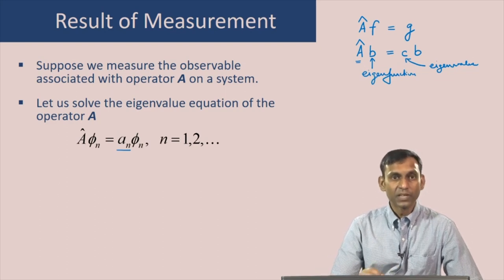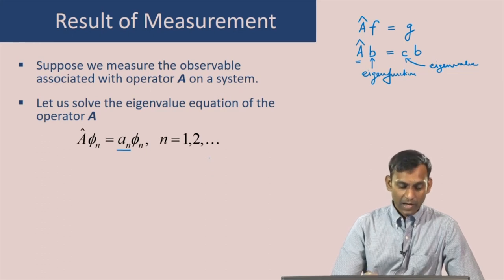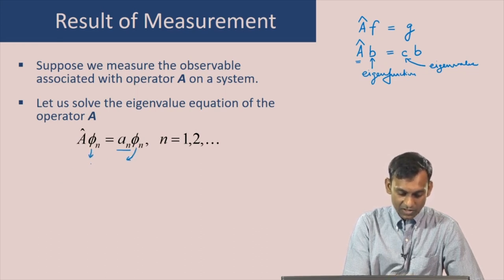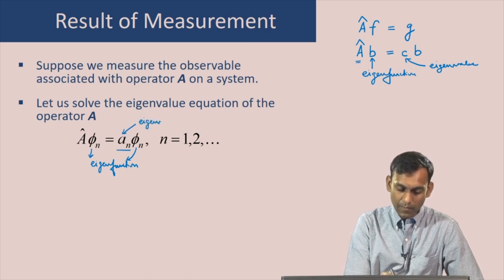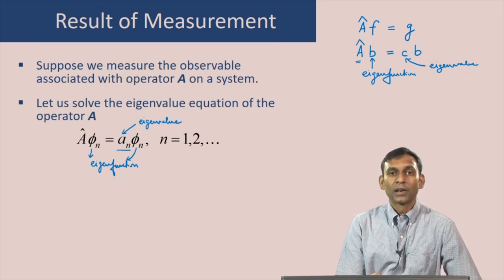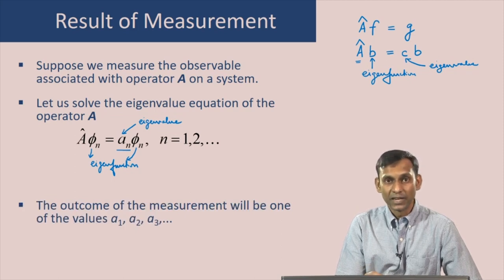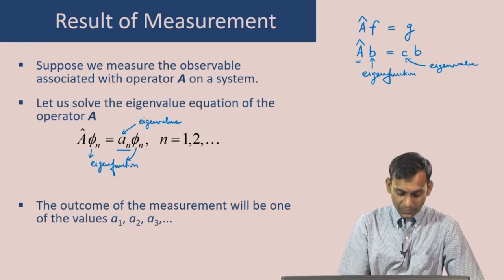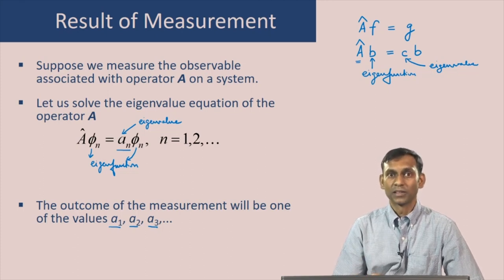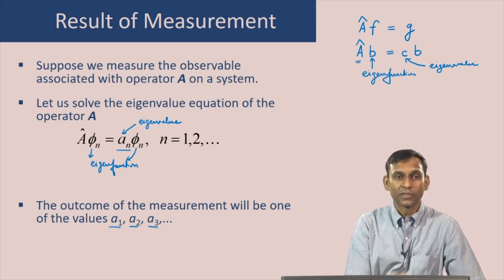Coming back to the measurement of the observable corresponding to the operator A: we solve the eigenvalue equation of the operator A, these phi's are the eigenfunctions, and this constant A is the eigenvalue. There are multiple eigenvalues and eigenfunctions denoted by n = 1, 2 and so on. The postulate states that when we make a measurement, the outcome will be one of these values A1, A2, A3 and so on. You cannot get any arbitrary value as in classical mechanics — there is a restriction, and in particular the values you can get are eigenvalues of the operator A.